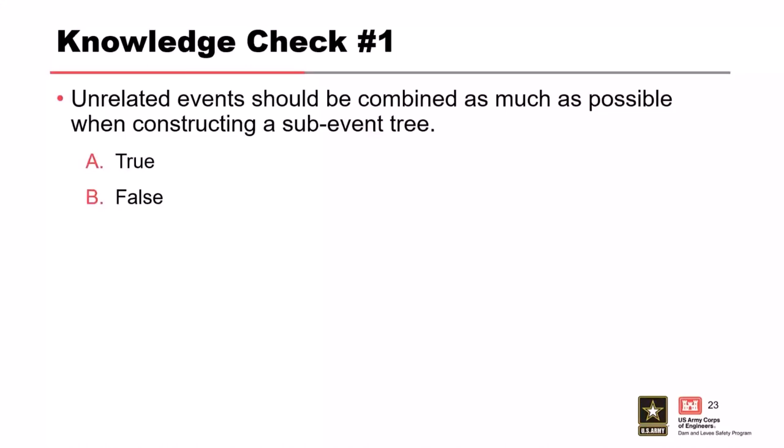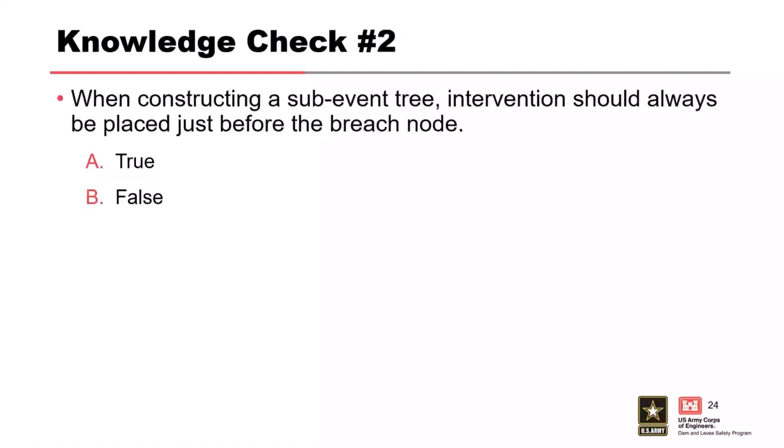Knowledge check one, also on Socrative: 'Unrelated events should be combined as much as possible when constructing a sub-event tree.' True or false? The answer is false — unrelated events should not be combined. You want to make sure you include the complete step-by-step progression of the failure mode and don't eliminate any steps.